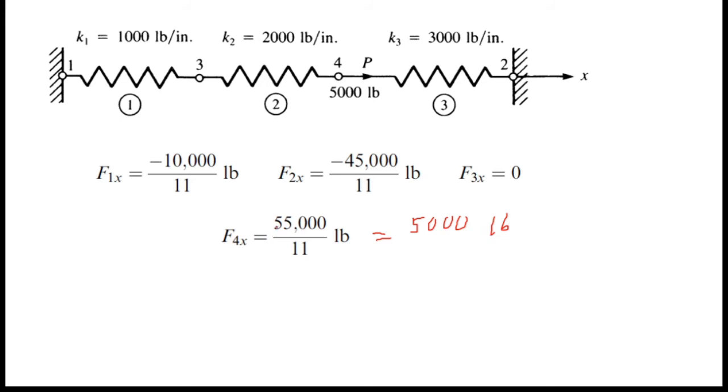This is F4x. I can modify this as 55,000 over 11 equals 5000 pounds. I modified this because I just needed to make this the same format. All three forces are in the same format, over 11, so I can easily compare values.